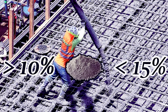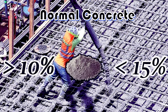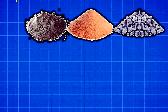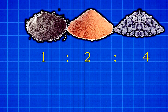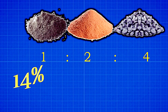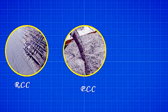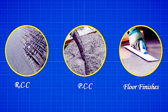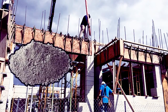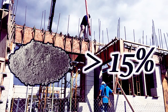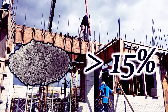If the concrete contains cement content more than 10% and less than 15%, it is called normal concrete. For example, concrete mix 1:2:4 is a normal concrete which has cement content of approximately 14%. Normal concrete is generally used in CC, PCC, and floor finishes.